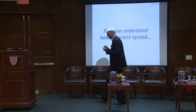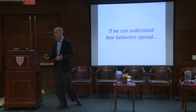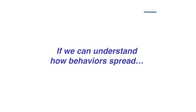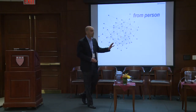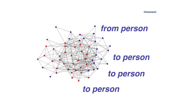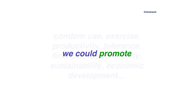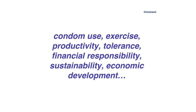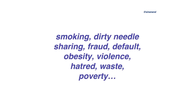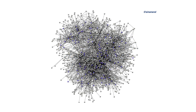The basic idea I want to convey is that if we can understand how behaviors spread in a network, and thus in a population from person to person, then we can potentially promote behaviors like condom use, exercise, tolerance, economic development, and financial stability. And we can potentially contain behaviors like fraud, violence, waste, hatred, and poverty. What I do is mine massive social network data to understand how individuals influence one another, and how that influence spreads in a social network for purposes of policy or commercial changes.